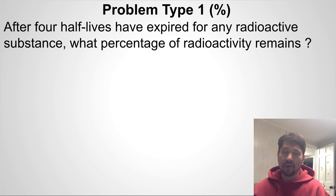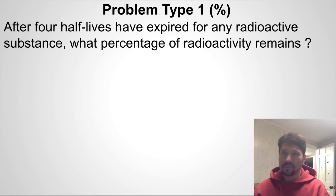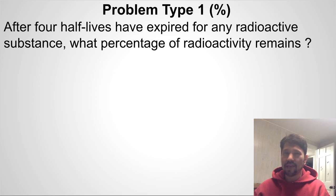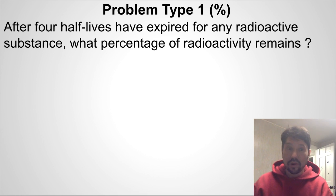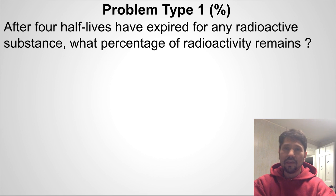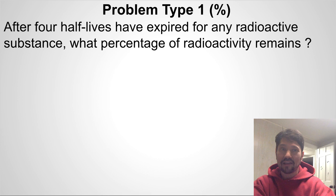We'll start with problem type 1, which is a percentage type problem. The question is: after 4 half-lives have expired for any radioactive substance, what percent of radioactivity remains? A lot of these problems I have two ways to do — one is by generating a table, which you'll probably use more frequently, and the other is by using your calculator. One suggestion is to do it both ways as a good way to check your answer.